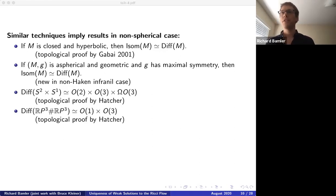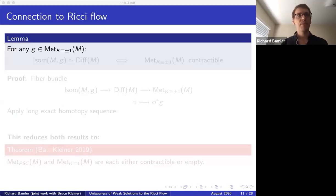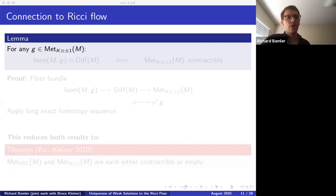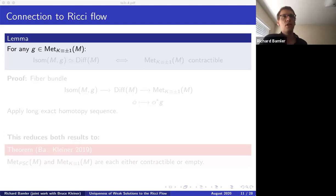Let me show you what the study of diffeomorphism groups has to do with Ricci flow. I want to show you one lemma — probably folklore — which gives a relation. The lemma states: consider a manifold like a spherical space form that admits a metric of constant curvature, and fix one such metric, for example a round metric on S³.